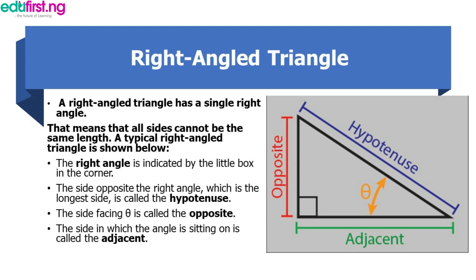For any right angle triangle, we have a given angle, which is angle theta. The side facing the given angle theta is called the opposite.